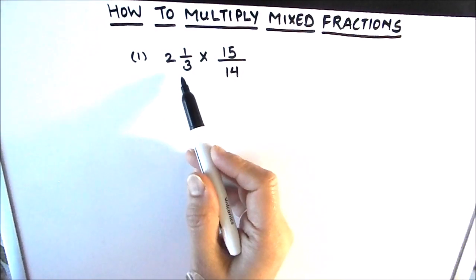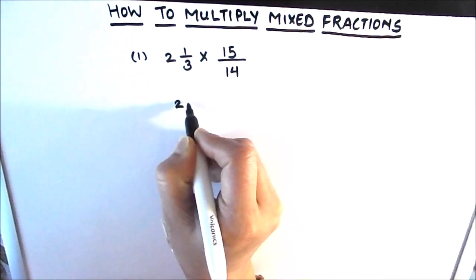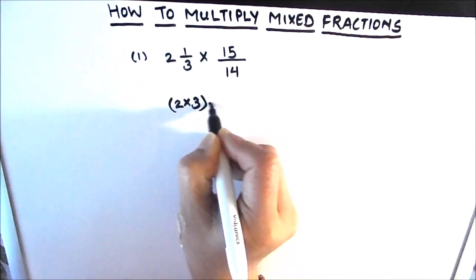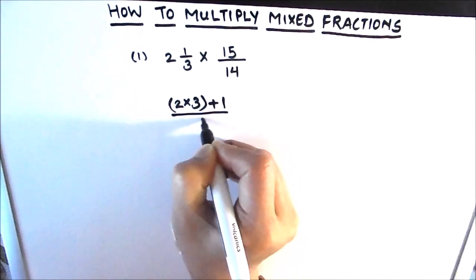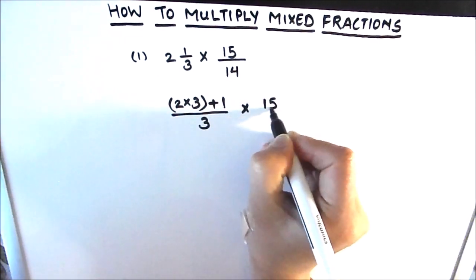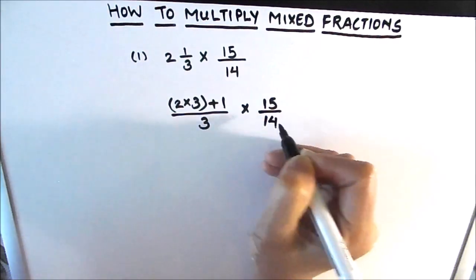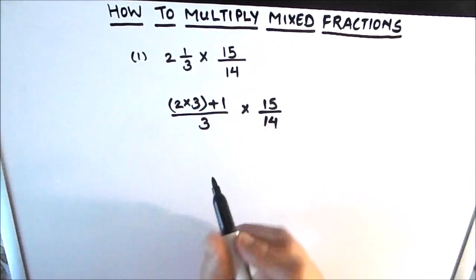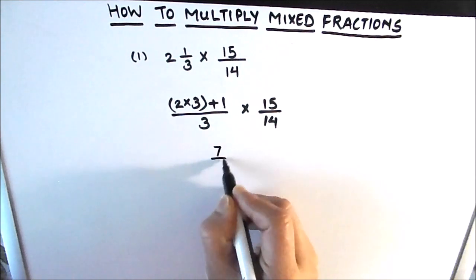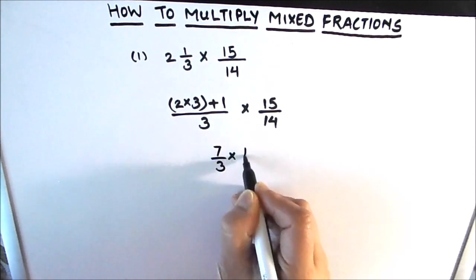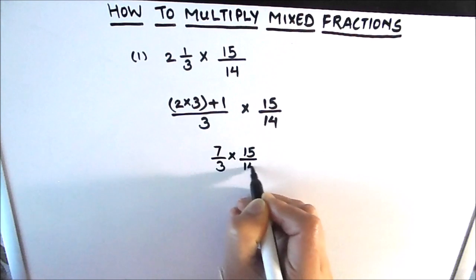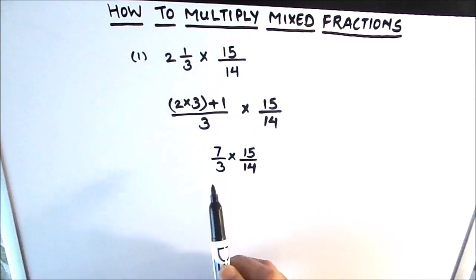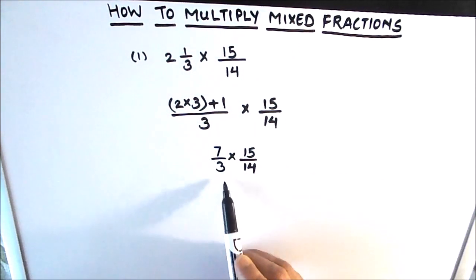For multiplying the two fractions, first we need to convert this mixed fraction into an improper fraction. So that's going to be 2 times 3 plus 1 divided by 3, times 15 upon 14. So 2 times 3 is 6, 6 plus 1 is 7 — that's going to be 7 upon 3, times 15 upon 14. Now the mixed fraction is converted into an improper fraction.